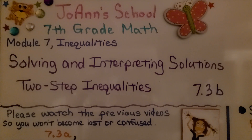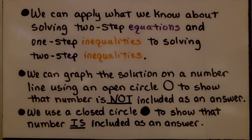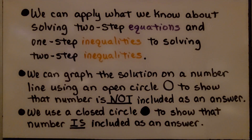Solving and Interpreting Solutions: Two-Step Inequalities, Lesson 7.3b. We can apply what we know about solving two-step equations and one-step inequalities to solving two-step inequalities. We can graph the solution on a number line using an open circle to show the number is not included as an answer, and a closed circle to show that it is included.